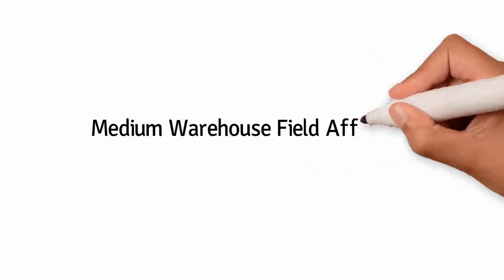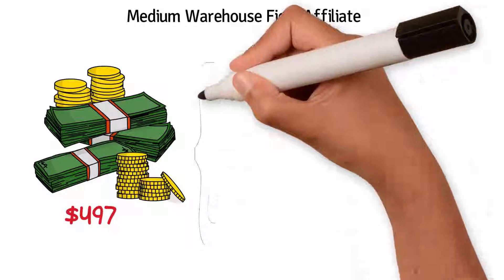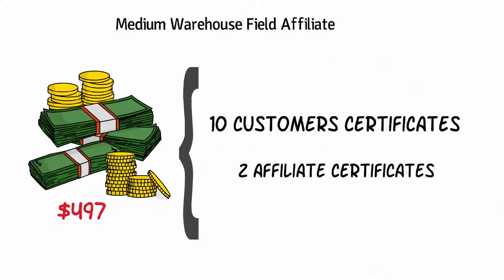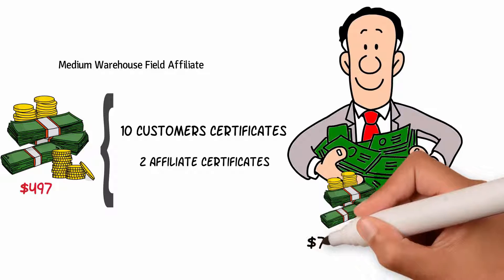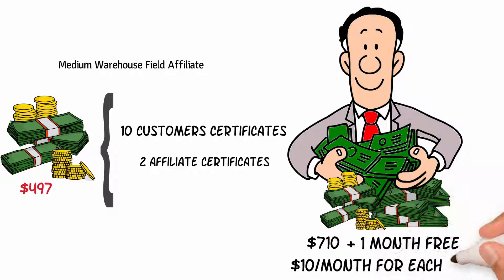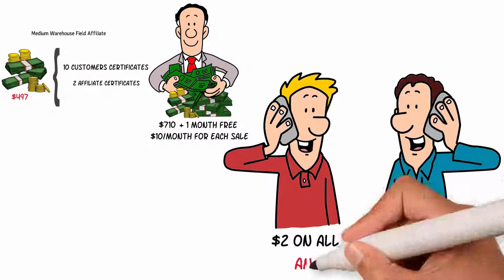Medium warehouse field affiliate: With $497 you get ten customer certificates and two affiliate certificates and selling them earns you a whopping $710 plus your first month free. You still get $10 each month for each customer but you get $2 on all their referrals and their referrals.